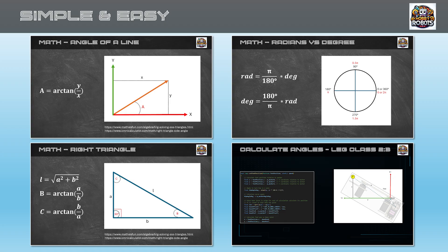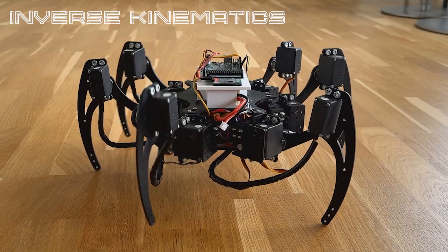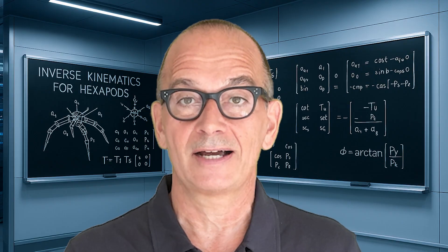I'll show you how to implement inverse kinematics using simple math and easy to follow code. No advanced math degree required. We'll use my hexapod here as an example, but the same principles apply to any legged robot or even robotic arms. And once you understand the basics you will be able to create really smooth complex movements with just a few lines of code. So let's get started.